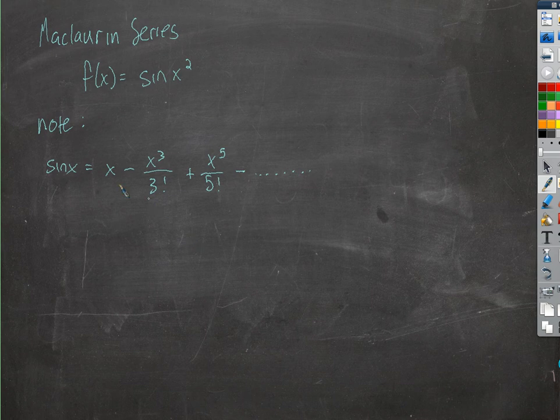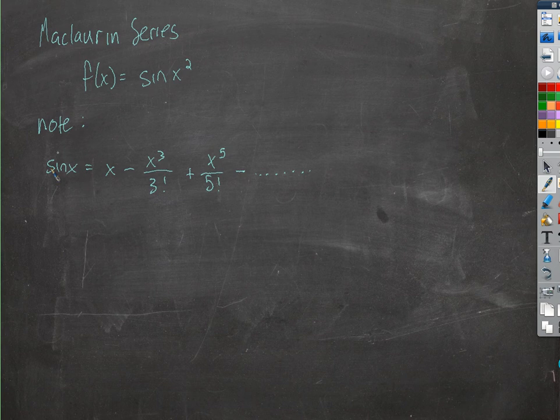And it's really simple because this is the Maclaurin expansion for the sine of a variable. That variable is x squared, so the Taylor expansion for sine of x squared